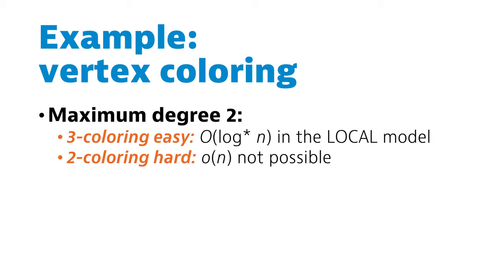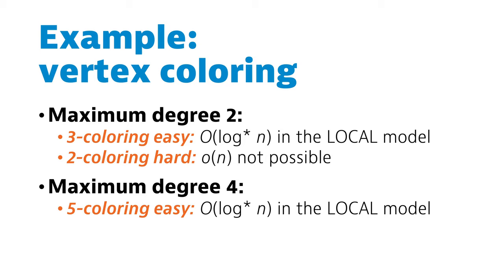Now what happens if you look at, for example, graphs of maximum degree 4? Again, we know that vertex coloring with 5 colors can be done fast. Remember that this is delta plus 1 coloring, something we learned to do fast in week 4 of this course.